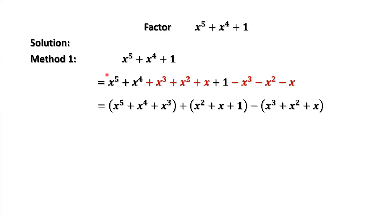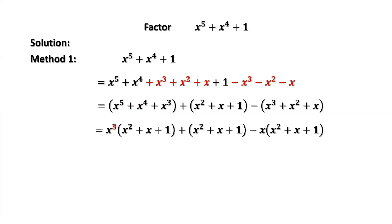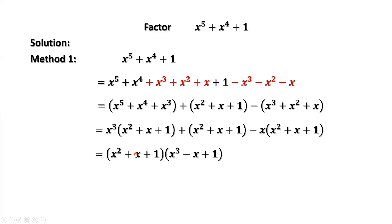Now we group the first three terms, the middle three terms, and the last three terms. What is the common factor for the first group? The common factor is x to the power of 3 — we can factor x to the power of 3 out. What is the common factor for the last group? It is x — we can factor x out. Come back to check these three groups: x squared plus x plus 1 is the common factor. Therefore, we can factor x squared plus x plus 1 out.